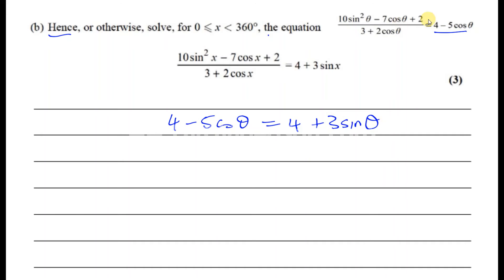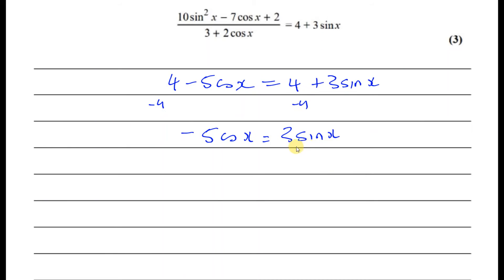I've just replaced, in fact we're solving this equation. This equation is in x, so I can just write x instead of θ here. Now how do I solve this? Well we can see something interesting happening. The fours will disappear when I try to bring them together. If I take four from both sides, I'll end up with -5cosx = 3sinx. And I can make this into tanx by dividing by cosx. If I divide both sides by cosx, this becomes tanx and these cancel out.